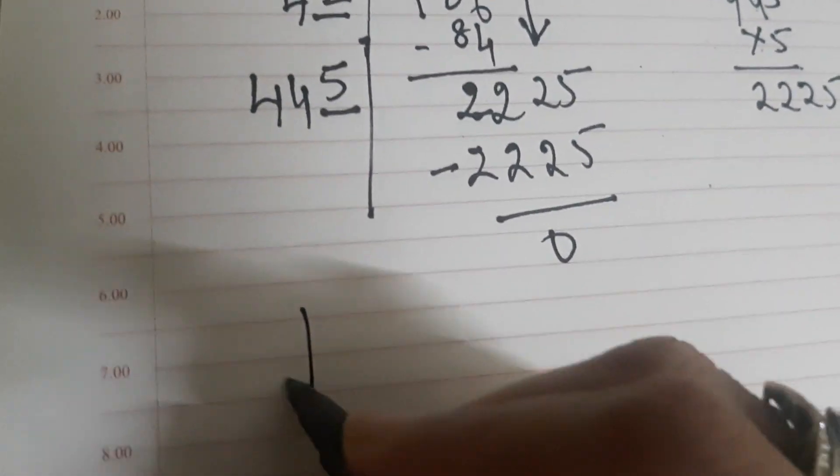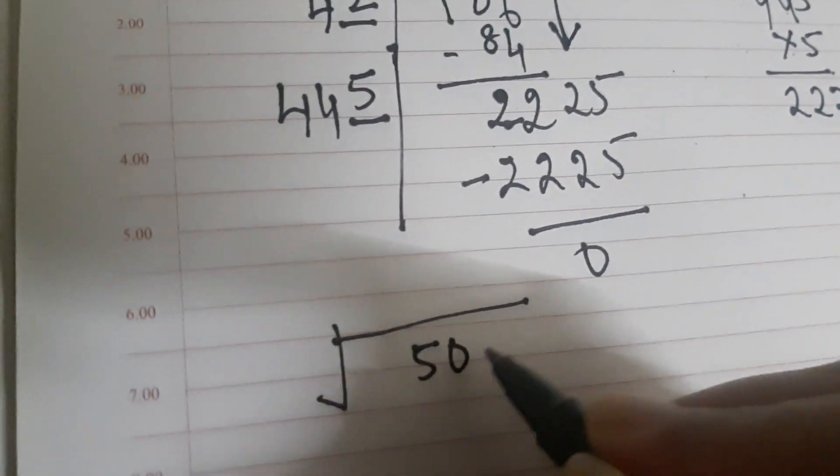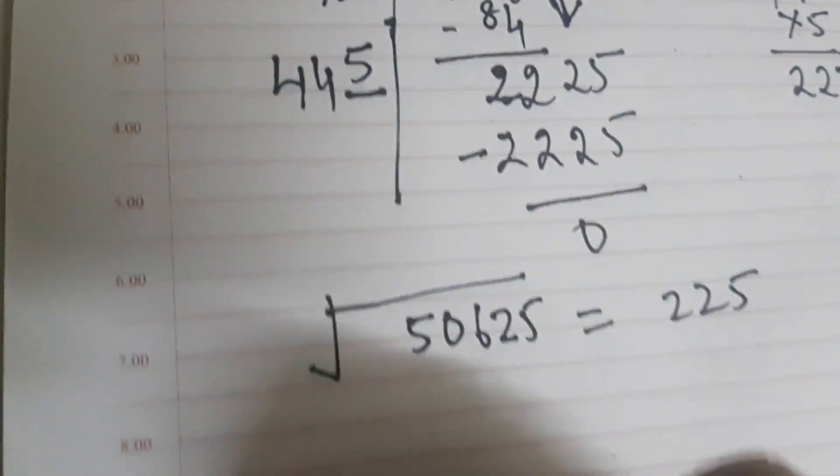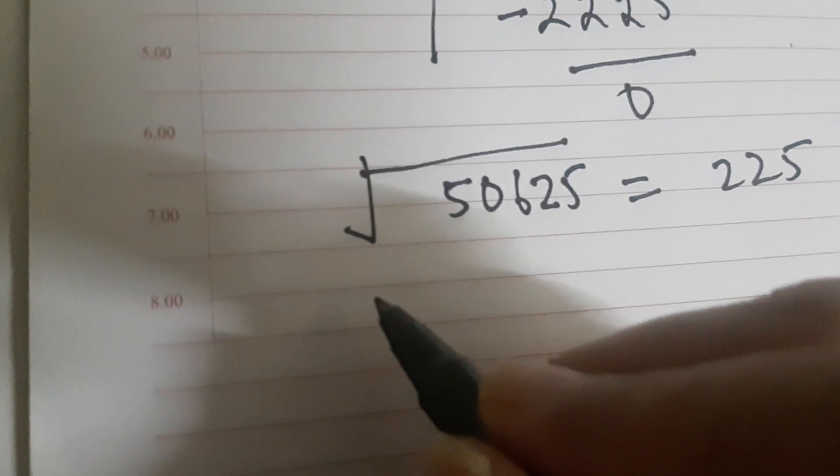So this means square root of 50625 is equal to 225.